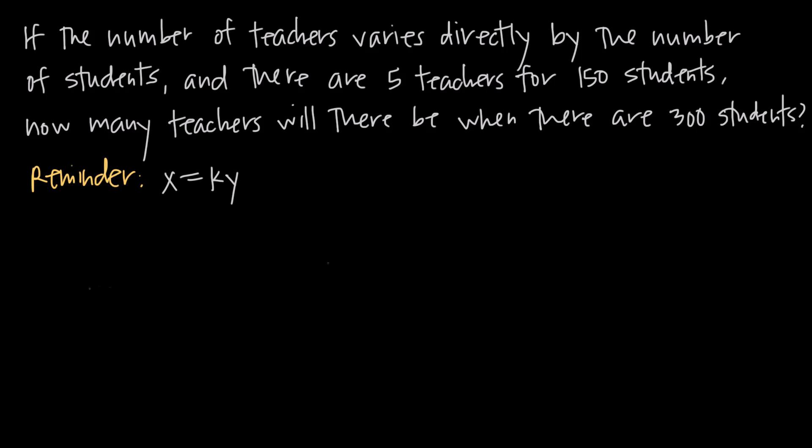In this video we're talking about direct variation, sometimes called direct proportion or direct ratio. It means that one thing varies directly with another — if one increases, the other increases; if one decreases, the other decreases. In another video we'll talk about inverse variation, but with direct variation they always move in the same direction.